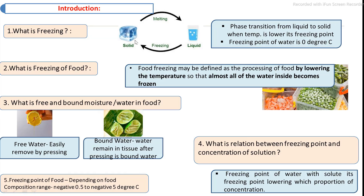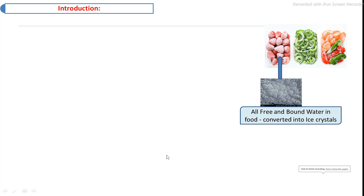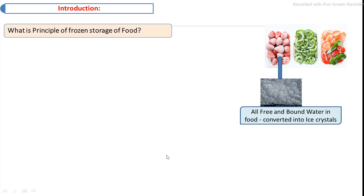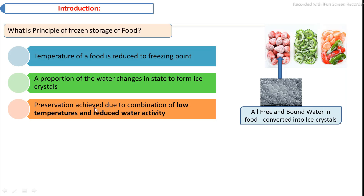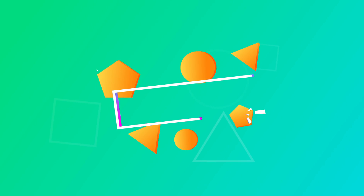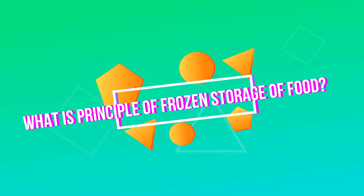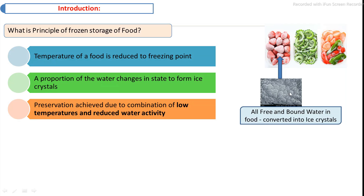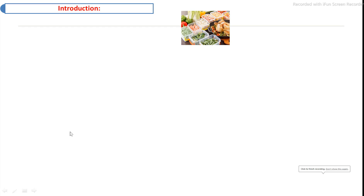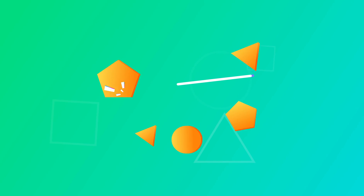The basic principle of food preservation by freezing: when food is stored below its freezing point temperature, the temperature of the food first reduces to its freezing point. Then all the moisture — in free and bound form — is converted to ice through crystallization. Due to the conversion of water into ice, water activity reduces, and under low temperature, microbial activity also reduces, resulting in preservation of the food.